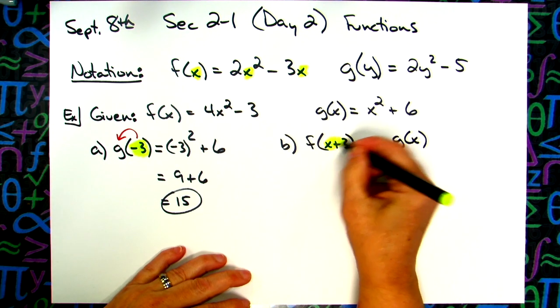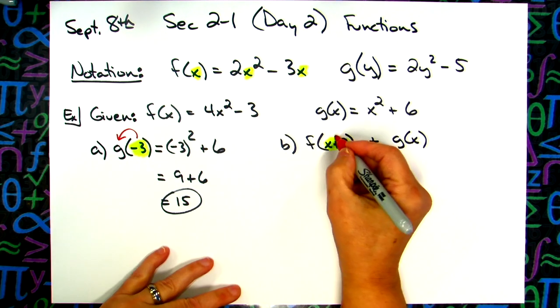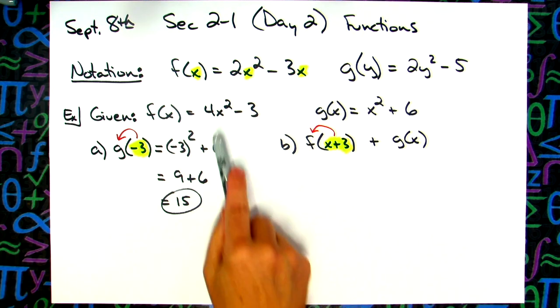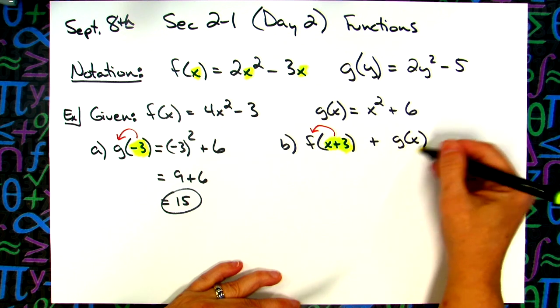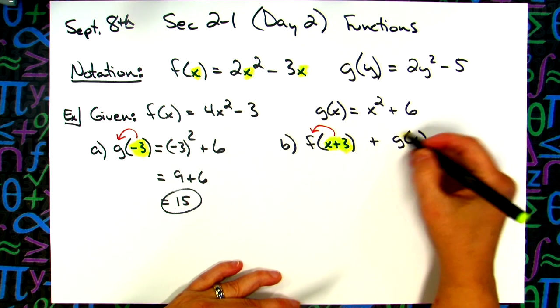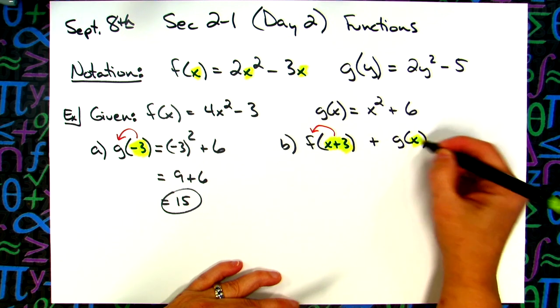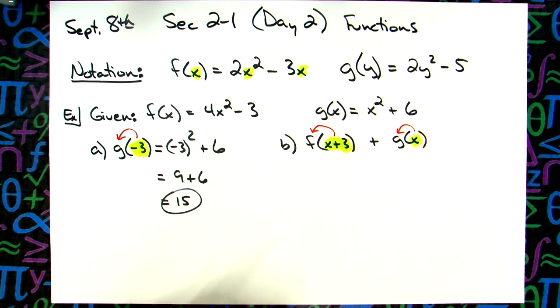Now, could I put something else other than a number there? Yeah, I could put 2x, I could put 3x squared, I could put 5x plus 6. So let's plug in maybe say an x plus 3. And then let's go ahead and just be a little bit more creative with this one and also add to that just g of x.